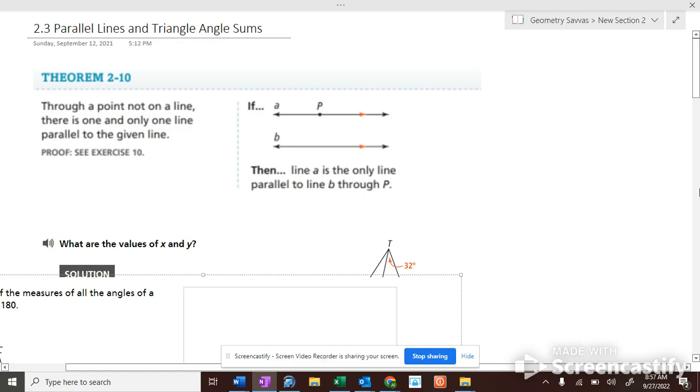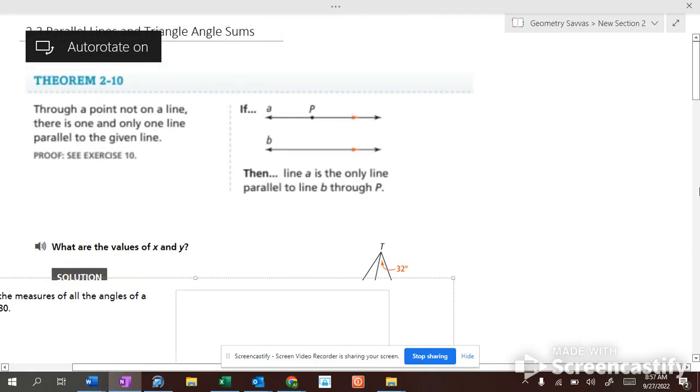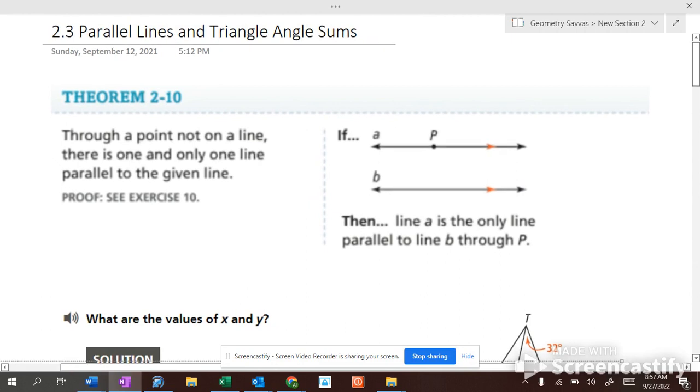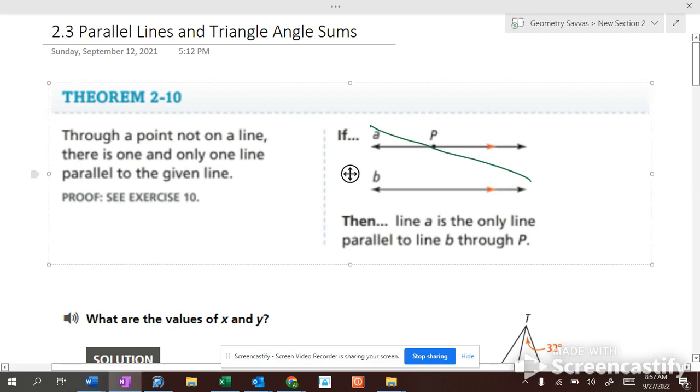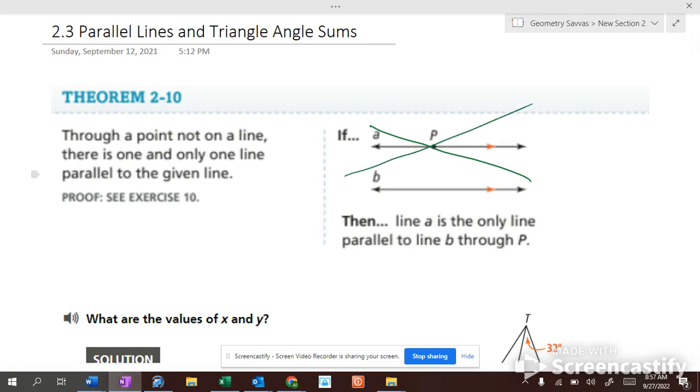All right, so we have a theorem that says through a point not on a line, there's one and only one line parallel to the given line. You can't have more than one line parallel to a line that goes through a point. There's only one.